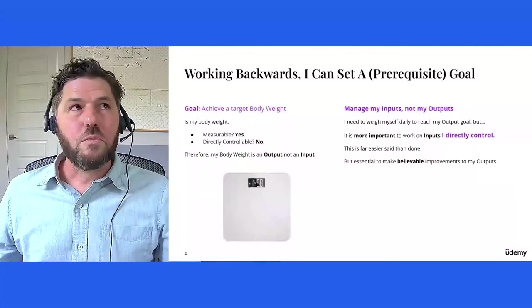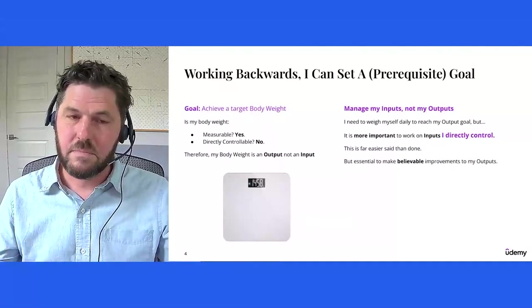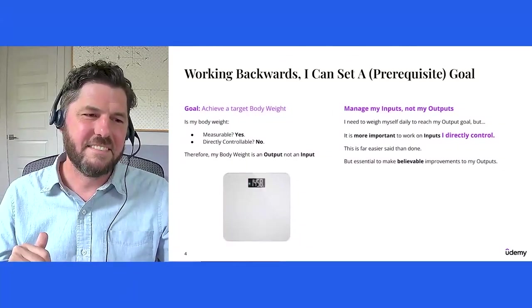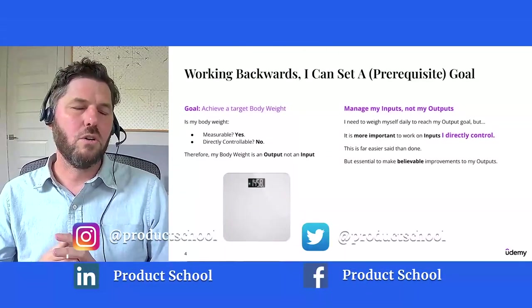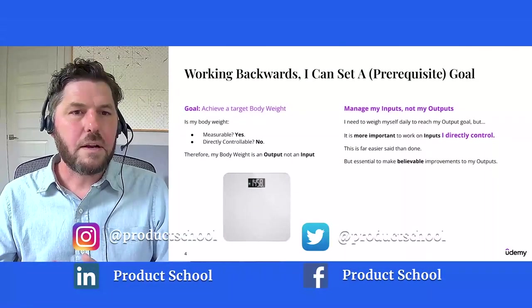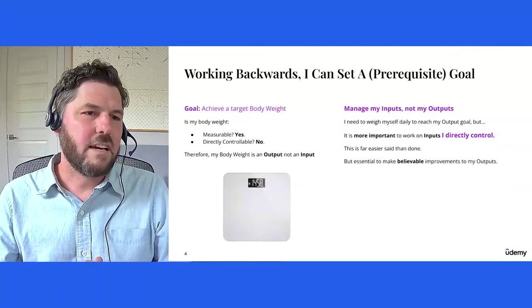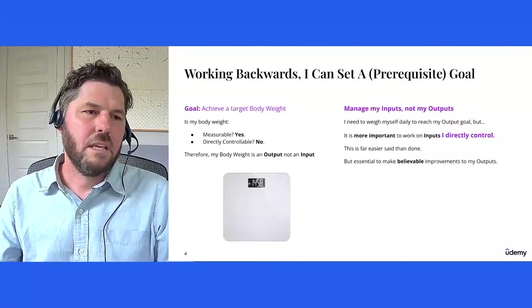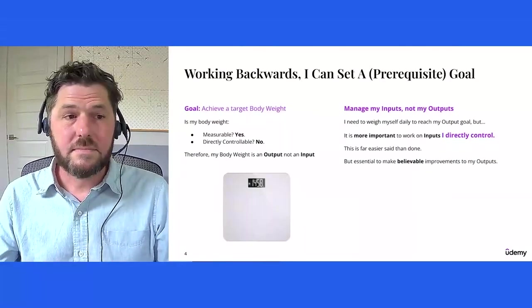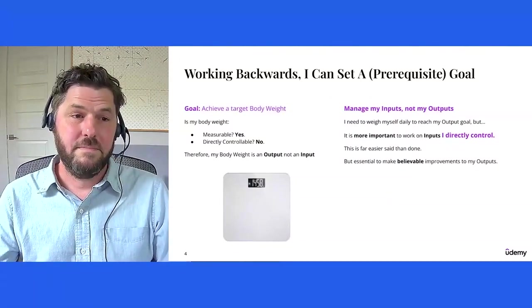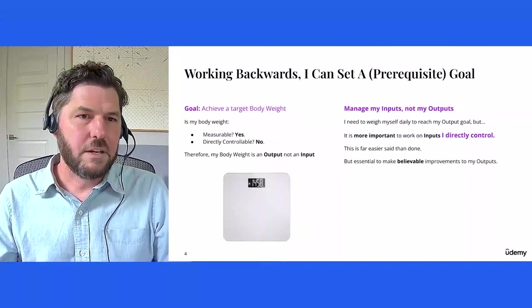What should I do to achieve this goal? Well, I don't have any direct control over, you know, I don't have a magic wand. I can't just magically be at the end of the half marathon happy and healthy. So I need to work backwards and I need to set a prerequisite goal. And so a useful prerequisite goal for me to set is to achieve a target body weight so that I can run this comfortably and effectively.